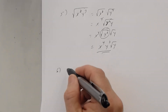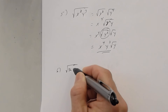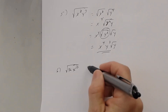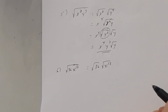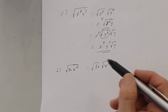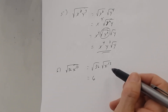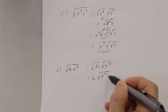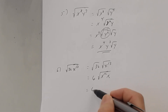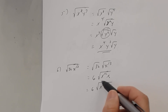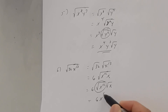Number six: the square root of 36x to the 13th. Split apart: square root of 36 times square root of x to the 13th. Square root of 36 is 6. For x to the 13th, the largest even number less than 13 is 12, so it becomes square root of x to the 12th times x. That gives 6 times square root of x to the 12th times square root of x. Square root of x to the 12th is x to the 6th, so the answer is 6x to the 6th times square root of x.